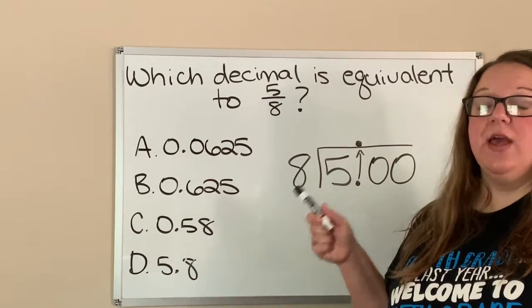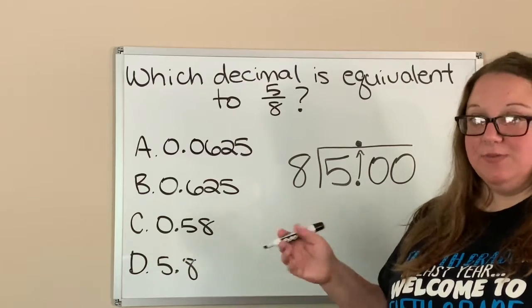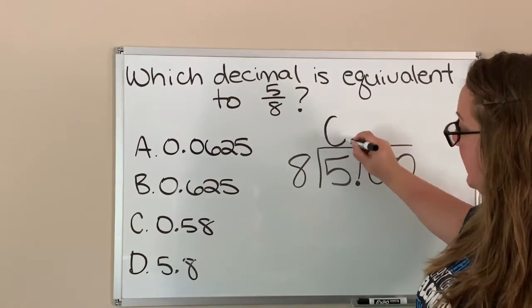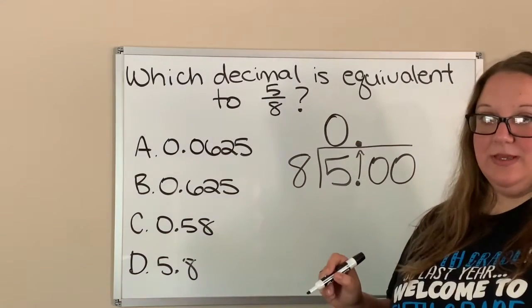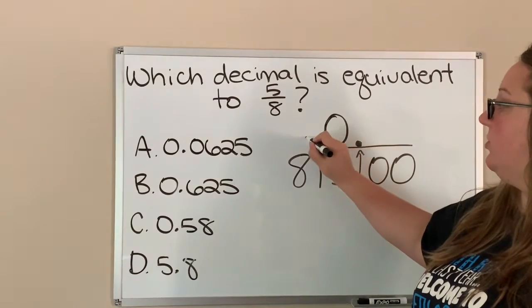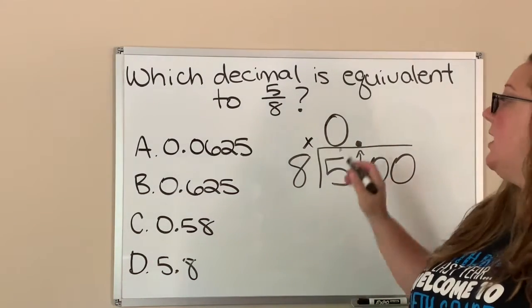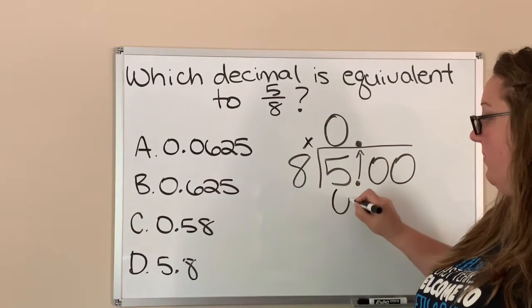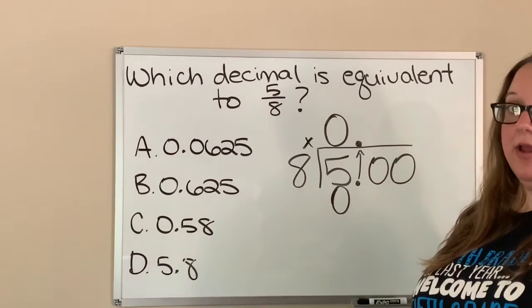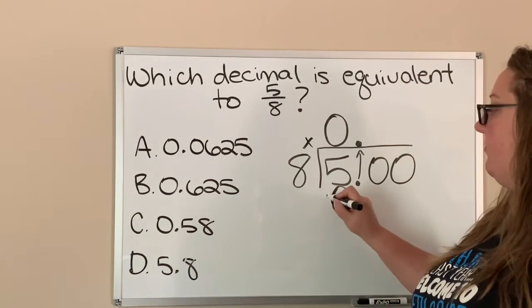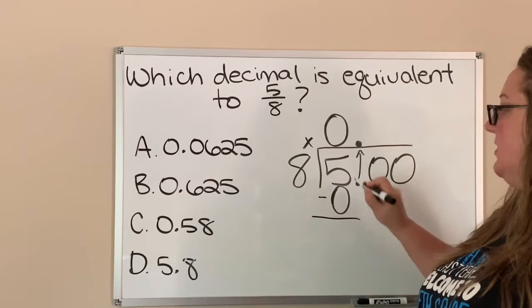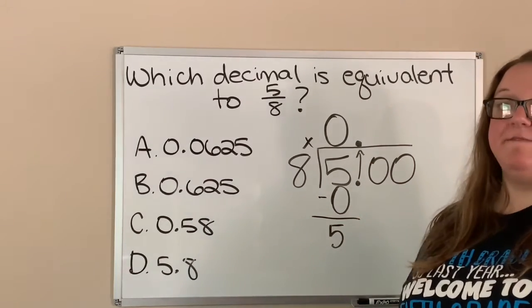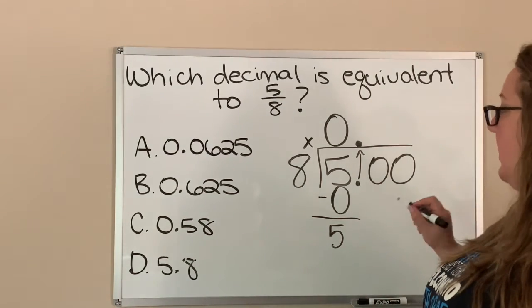Well, eight is bigger than five, so you cannot put something big into something small. If you wear a large t-shirt you can't go to the store and buy a small and expect it to fit. So eight goes into five zero times. We put our multiplication here — zero times eight is zero — so that zero gets put right there. Then we subtract: five minus zero is five.